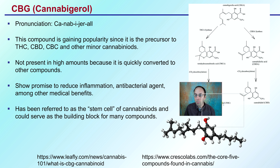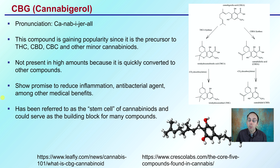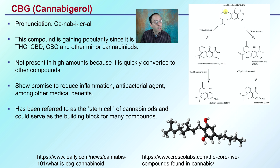Then we have CBG. As I mentioned, it gains some popularity because it's kind of the stem cell molecule of THC and CBD, and it's pronounced cannabigerol. This compound is gaining popularity since it's the precursor to THC, CBD, as well as CBC, and some other minor cannabinoids. It's not present in high amounts because it's quickly converted by the plant to other compounds, but it does show promise to reduce inflammation, can be used as an antibacterial agent, and has other medical benefits. It's often referred to as the stem cell of cannabis and could serve as the building block for many compounds — which is why some growers are really interested in breeding this, to produce the desired ratios of compounds in the end.